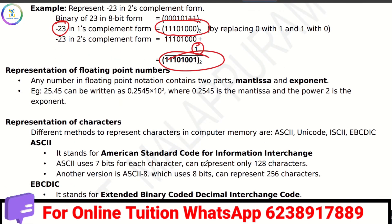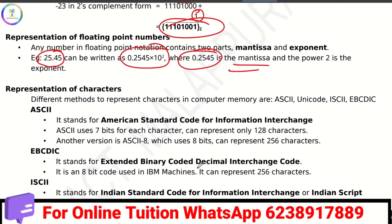This is floating point numbers — the representation of point numbers. We have to use the form 0.2545 into 10 raised to 2. In computer memory, we have to use different methods for floating point representation.